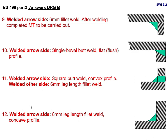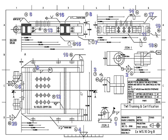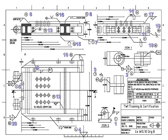Joint number 12 — the joint configuration shows a fillet weld with a connecting weld. Joint 12 is: welded arrow side — 8 mm leg length fillet weld, concave profile.